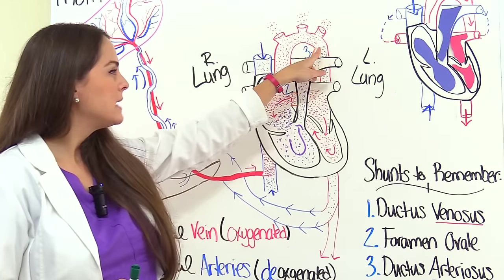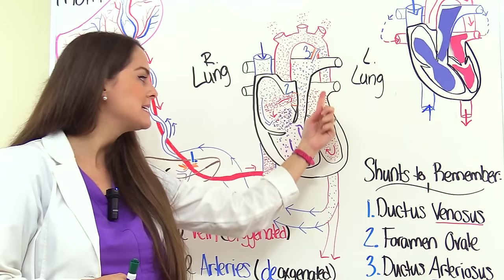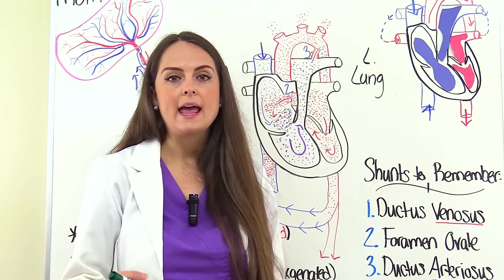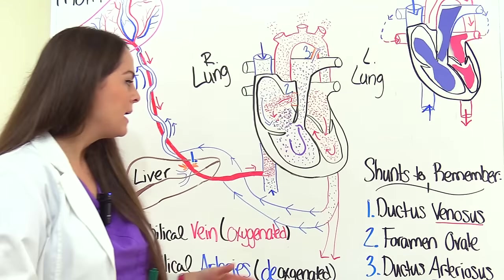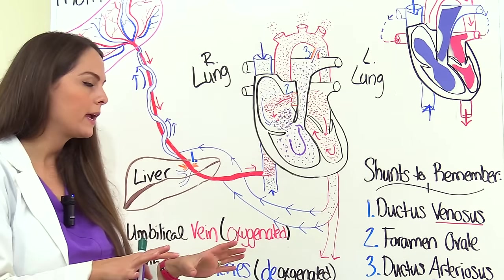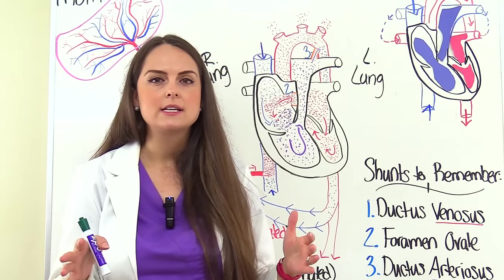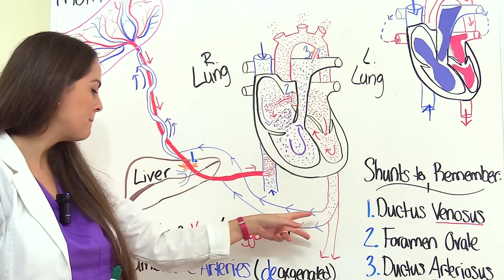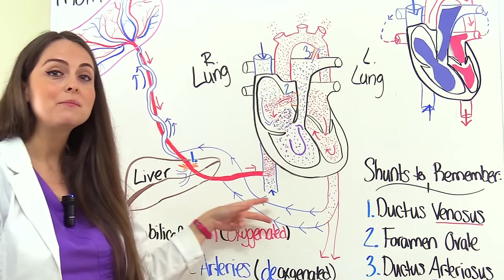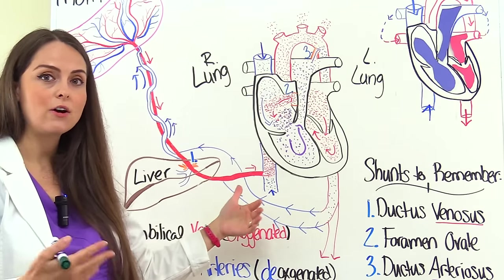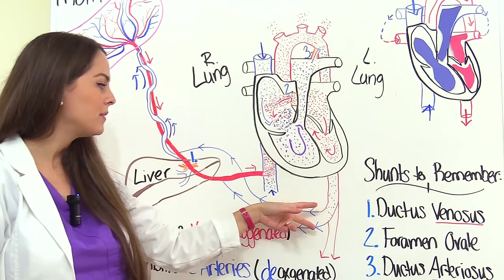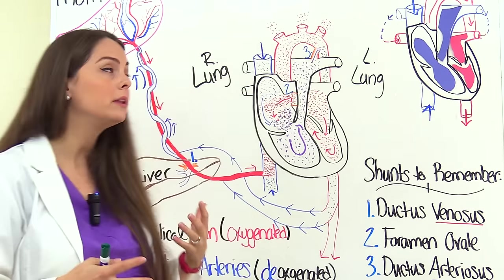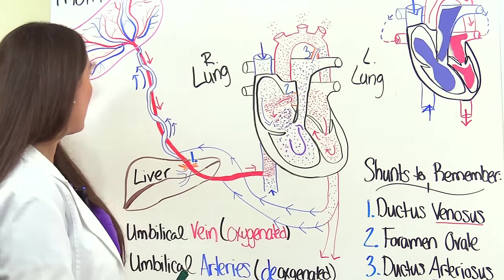The majority of this mixed blood flows down through the aorta — specifically the descending aorta. Some goes to the lower extremities, which have some oxygen from the mixed blood. The descending aorta branches off, and the internal iliac artery connects to the umbilical arteries. The two umbilical arteries carry the deoxygenated blood back to mom, who will remove that waste and help replenish it. And this cycle keeps going over and over.